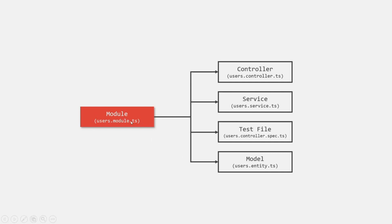Every module has some associated files, and the two most important files are the controller file and service file. The controller file will be responsible for storing logic to receive and handle incoming requests for that particular functionality. For example, if the user is making a request to our NestJS application to get a list of all the users, we will create a method inside the controller file which will be responsible for handling that request. We will write the logic to receive the request and handle it, but we will not write the complete business logic inside the controller file.